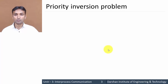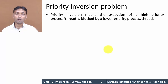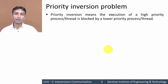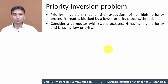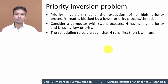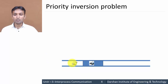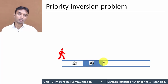A disadvantage of Peterson's solution is that it causes the priority inversion problem. Priority inversion means the execution of a high-priority process or thread is blocked by a lower-priority process or thread. Consider two processes: H with high priority and L with low priority. The scheduling rule says H runs first and then L executes. We have a processor and a printer, where the critical section involves shared resource usage.